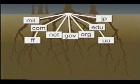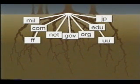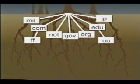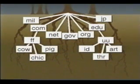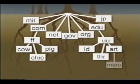Below these top-level branches reside the individual organizations, such as Friendly Farms, a commercial company, and the University of Utopia, an educational institution. Below University of Utopia, for instance, are Industrial Design, Theater, and Art.